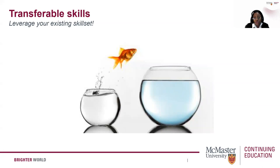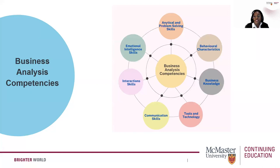The top five key transferable skills are: problem solving, critical thinking, creativity, communication, and stakeholder management. On this slide you see the six key categories of competencies for business analysts produced by the IIBA in the BABOK — the flagship book for business analysts. As we go through each of these categories, think about your own career and identify where you have applied these skills and how they can be carried over into a business analysis role. I've also added a seventh one, which is emotional intelligence.